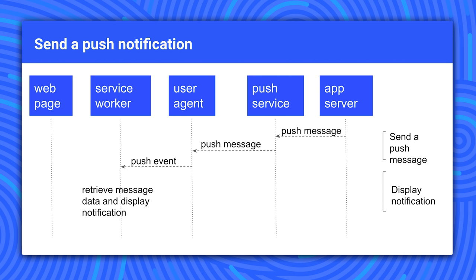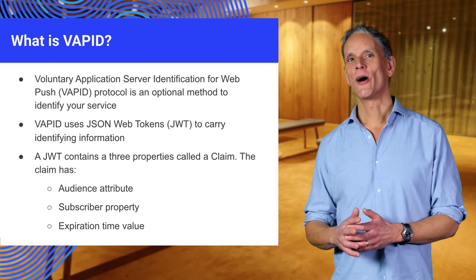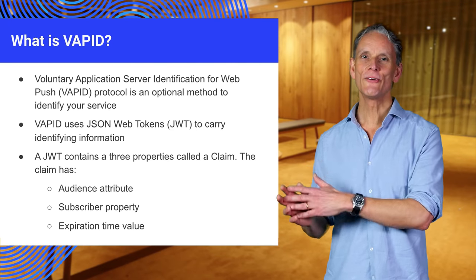The service worker gets the data from the message and displays a notification. In this example we're using Google's web-push library for Node.js to send a push message from a Node.js server. The TTL value in the options specifies the time in seconds that the push service should keep trying to deliver the message — this is important to set correctly, as some messages have a short life while some may be valid for several hours or more. We then pass in the subscription object, payload, and options object to sendNotification.